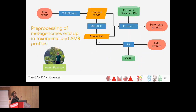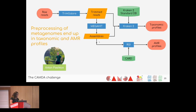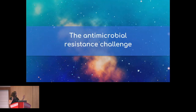We downloaded all the metagenomes and processed the data. We used Trim Galore to remove adapters and contamination, then MEGAHIT to assemble all the metagenome samples. With the assemblies, we ran Kraken to create taxonomic profiles and CARD to create antimicrobial resistance profiles.